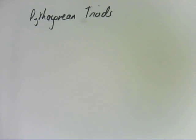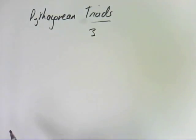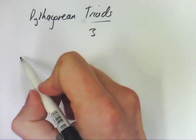There are these things called Pythagorean triads. Tri meaning three. So what is it?